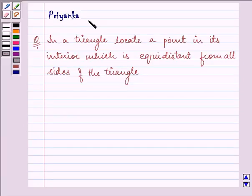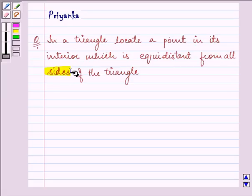Hi, how are you all today? My name is Priyanka and the question says: In a triangle, locate a point in the interior which is equidistant from all sides of the triangle.